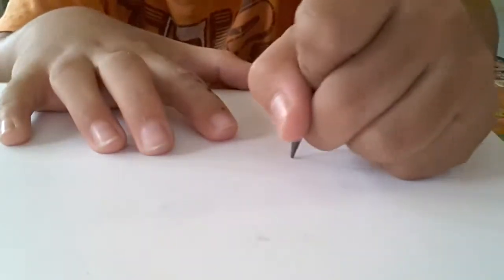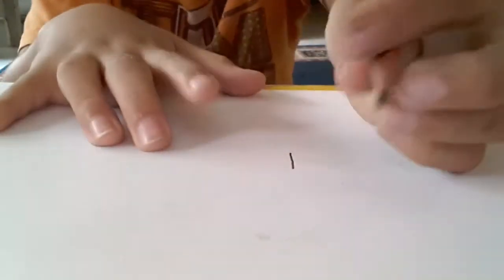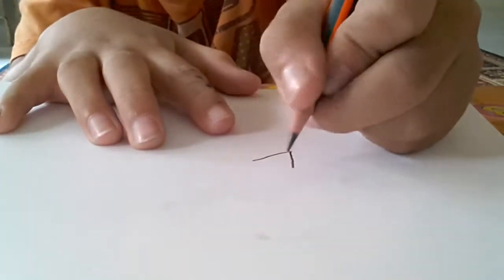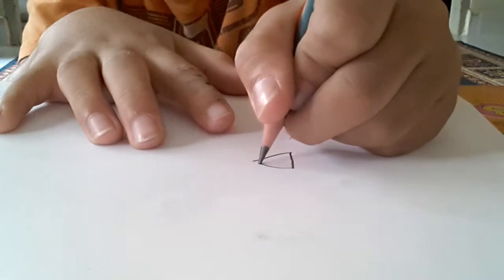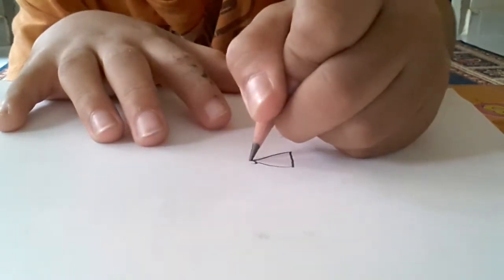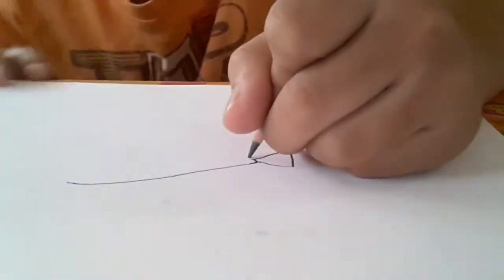It looks like a number one. Step back. First, draw like that and like this. And then you draw like this, and like this. Then you draw like this, and then you draw it like this.